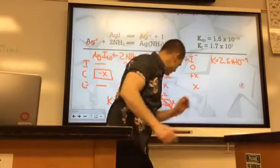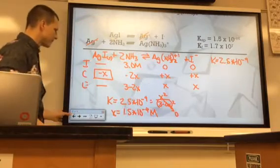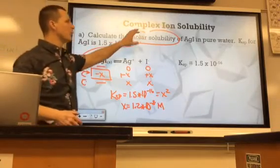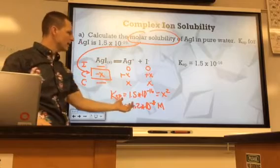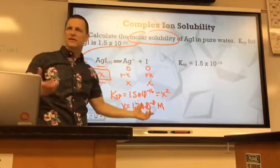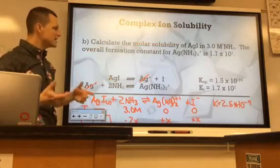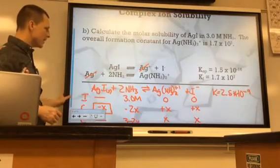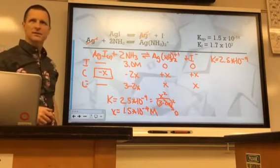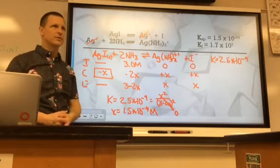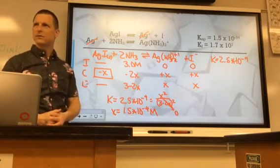However, when you think about on the previous slide, when we just were trying to dissolve silver iodine in pure water, it would only dissolve to 10 to the negative 8th molarity. Having the ammonia in there increases its solubility by about 10,000 times. So I guess we'll give it some love.